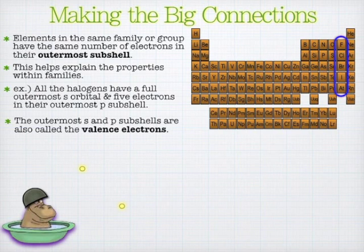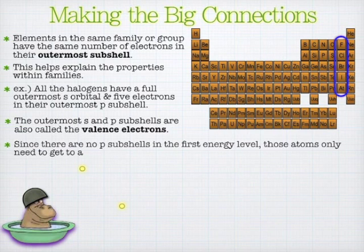And this actually corresponds to what are called the valence electrons. And so we talked about the magic number being eight for valence electrons before. Well, the valence electrons are the outermost S and P subshells combined.